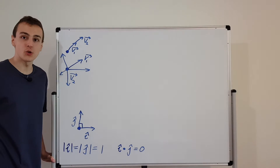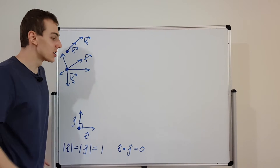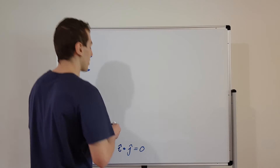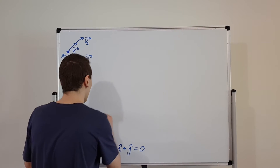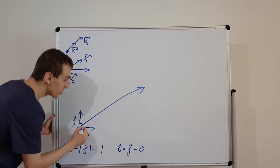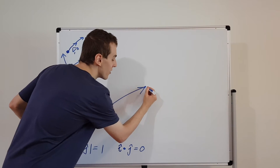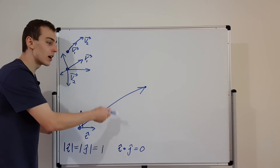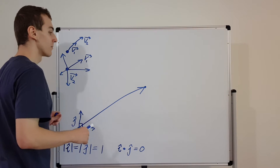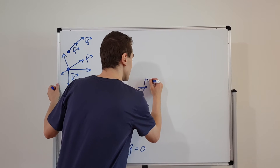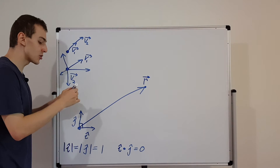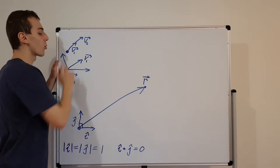Now let's actually use i-hat and j-hat to construct a general vector. Let's take the position vector and denote it by r. I'm going to draw it here — r goes from the origin to a point, and the distance from the origin to that point is the magnitude of r. The angle of r specifies the direction of this vector.